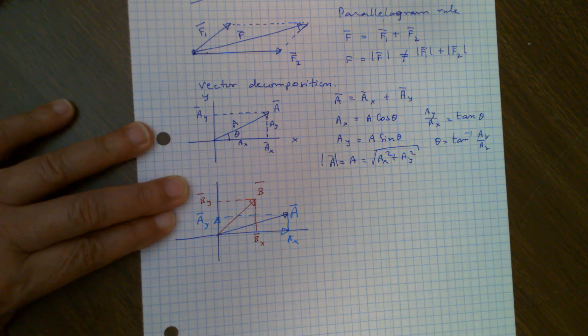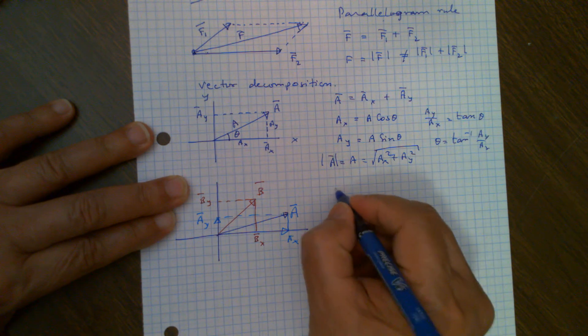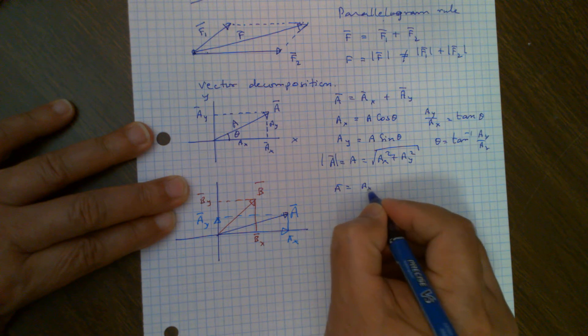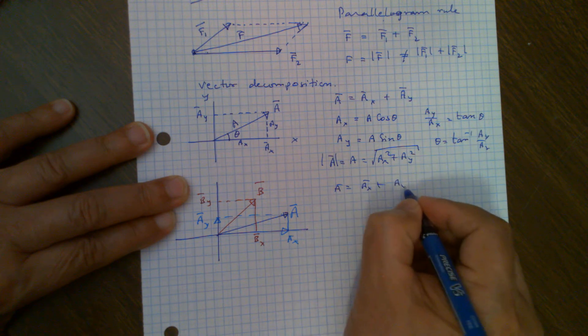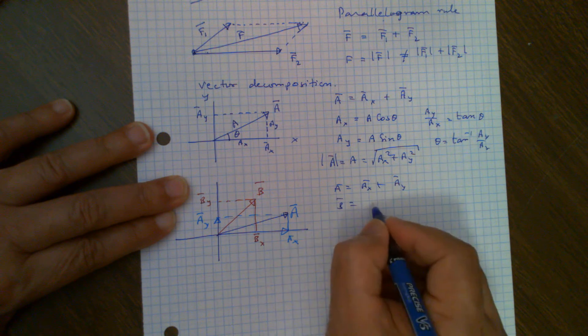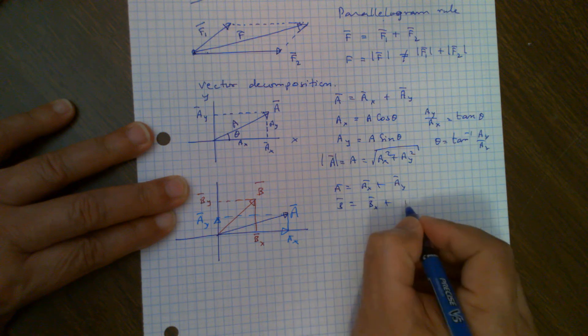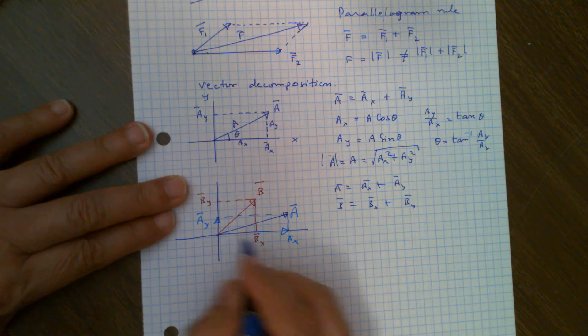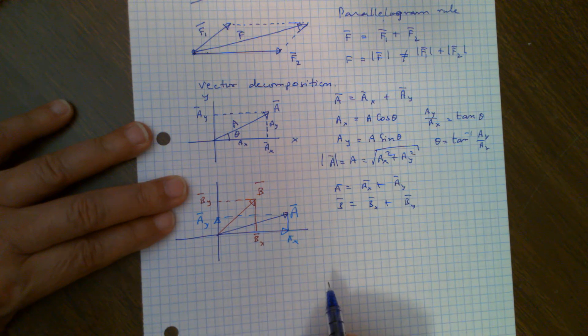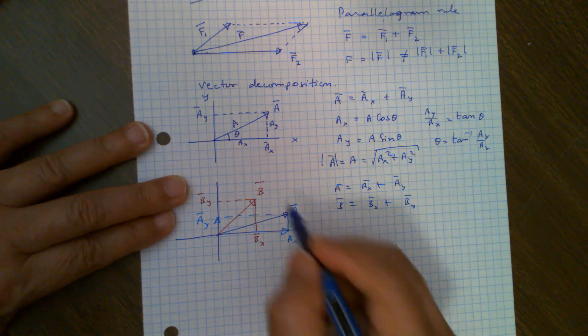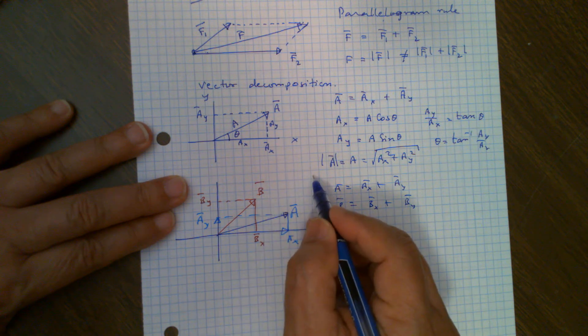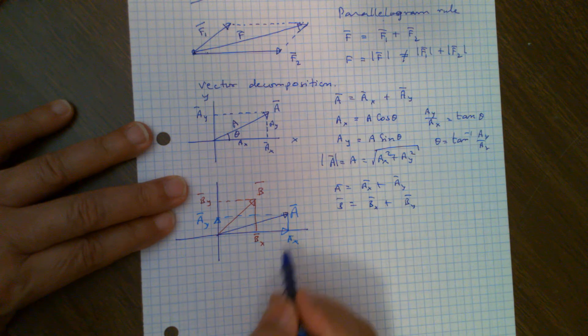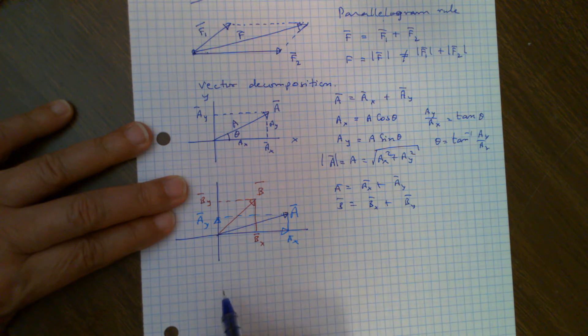Obviously, vector AX plus AY will give you A. And vector BX plus BY will give you vector B. I am not saying magnitude, I am just telling you the vectors. Now, I want to find the resultant vector. So if I have to use parallelogram law, then I'll have to draw a parallelogram here. But instead, I now have decomposed A and B into X and Y components.